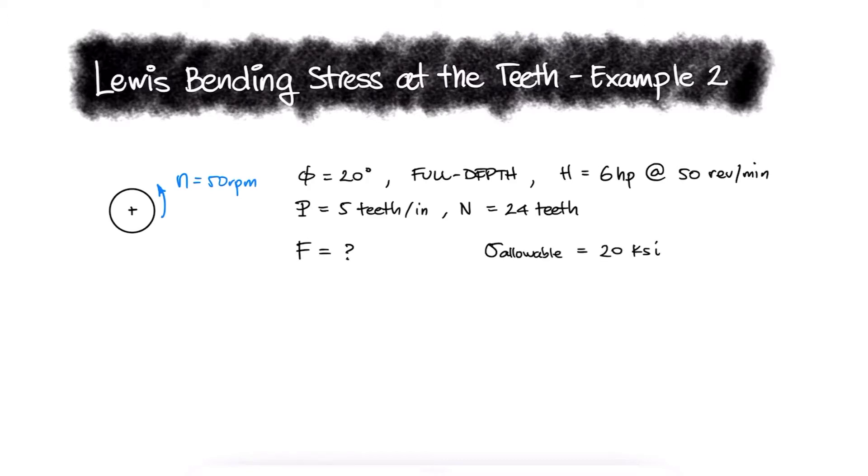This is the second example for the Lewis Bending Stress at the Teeth main video. Links to the main video and the first example are in the description below. Before the teeth yield, the bending stress at the teeth must be just below the maximum allowable stress.